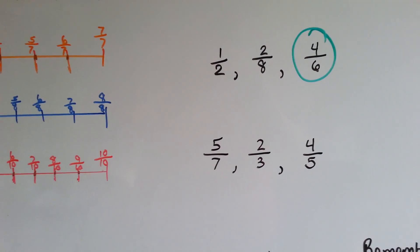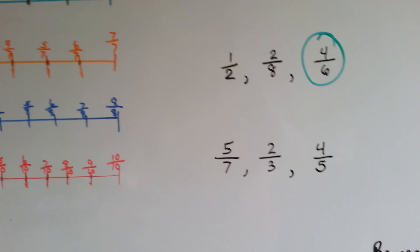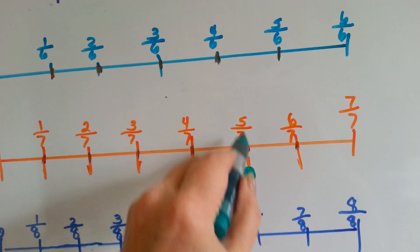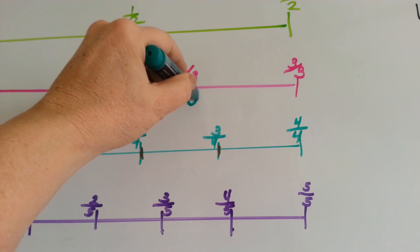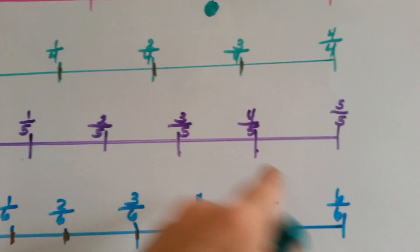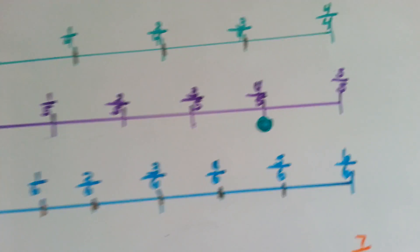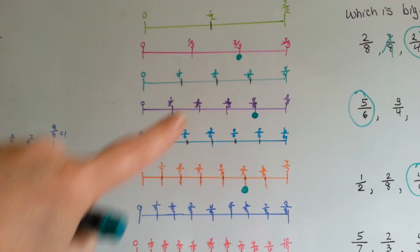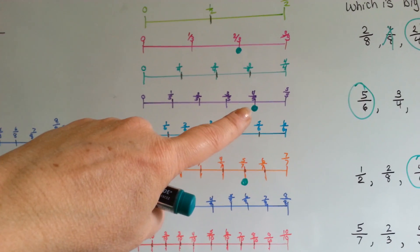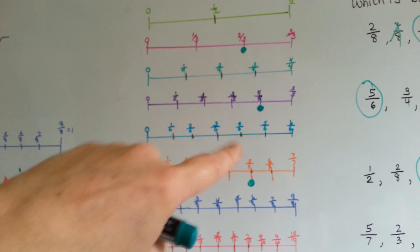We've got one last one: 5 sevenths, 2 thirds, and 4 fifths. Let's find 5 sevenths — here's the sevenths, here's 5 sevenths, it's right there. 2 thirds — 2 thirds is right here. And the last number is 4 fifths — here's the fifths, here's 4 fifths. I'm going to stand back and we're going to see who won. 2 thirds, 4 fifths, and 5 sevenths. The 4 fifths — he's the closest to the end, just by a little bit. So 4 fifths is bigger.